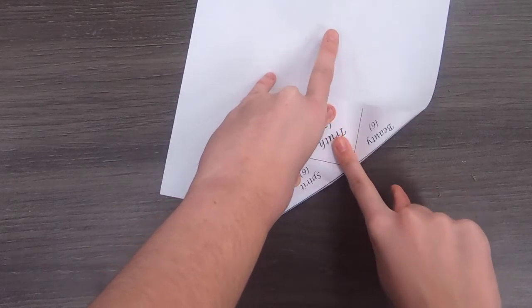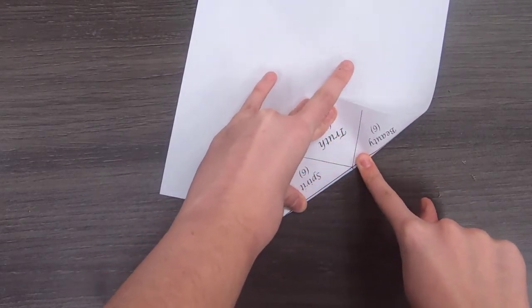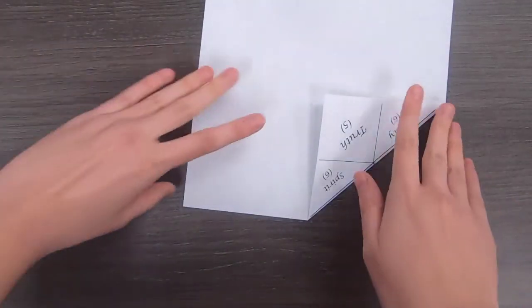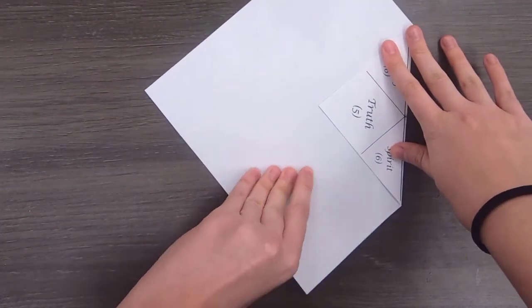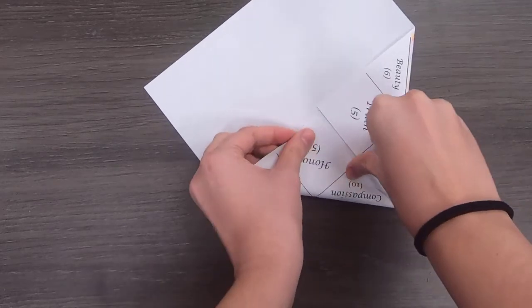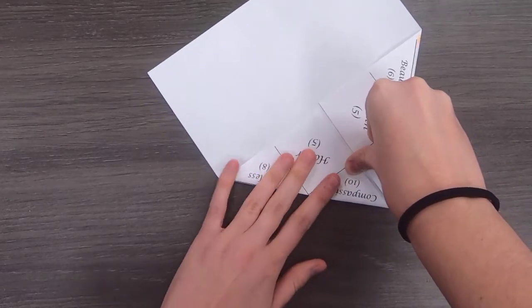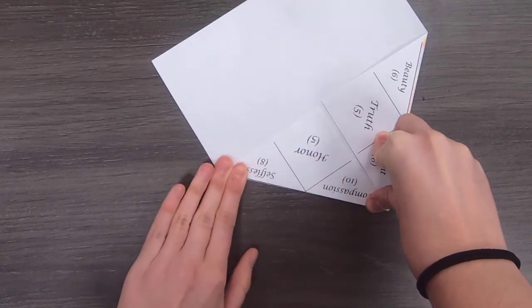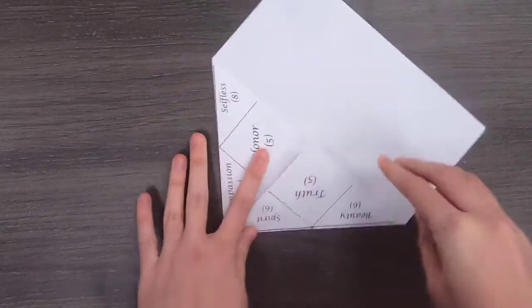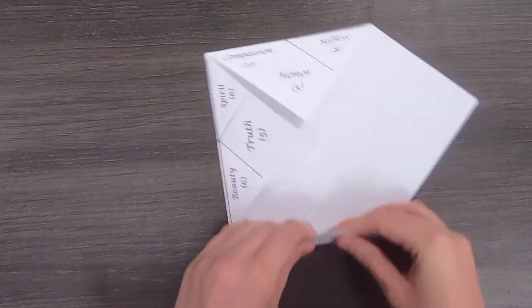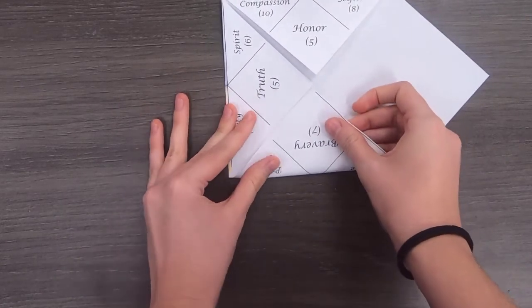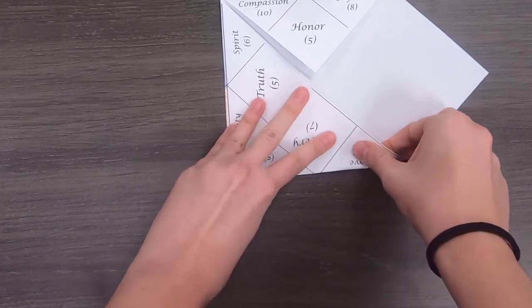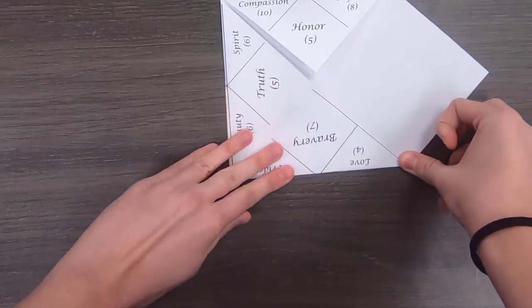But once you think you have it, you fold it down like this. Mine's a little bit off as you can see, but again, not a big deal. And then from there, take the other corner, you might start seeing a trend here, and fold it as perfectly as you think you can. That one was pretty good. And take the other corner and do the same.